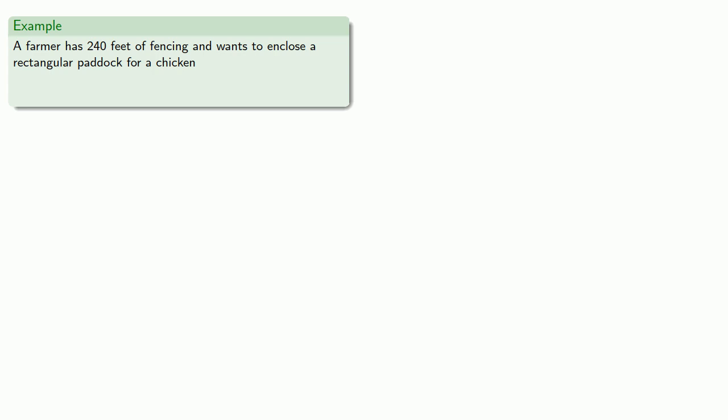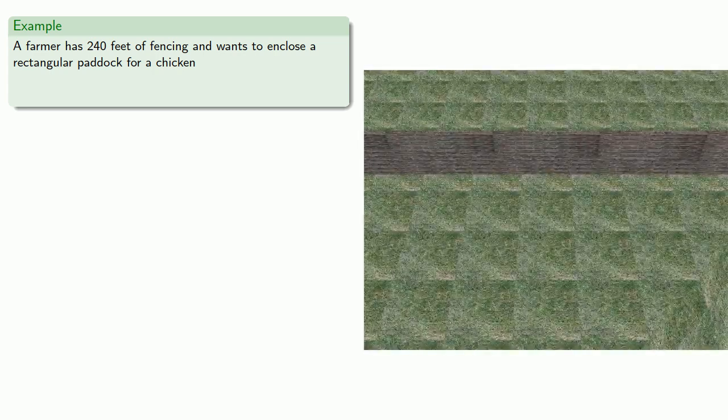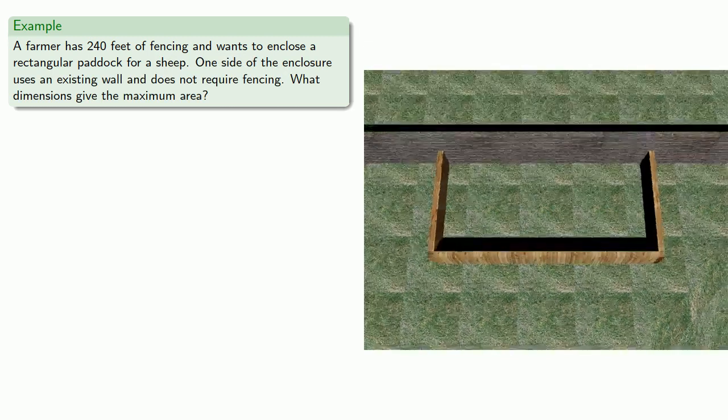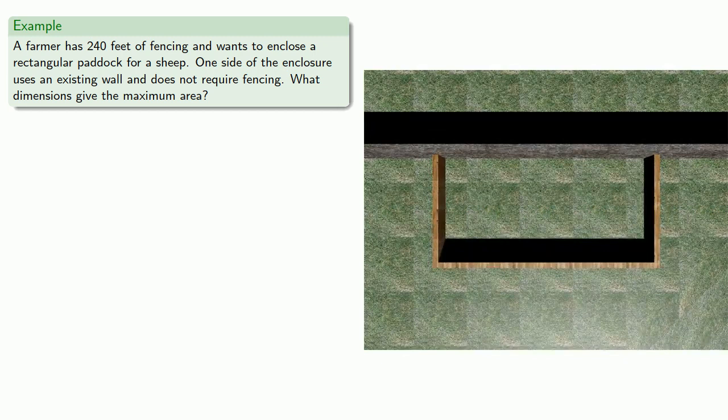For example, a farmer has 240 feet of fencing and wants to enclose a rectangular paddock for a sheep. One side of the enclosure uses an existing wall and does not require fencing. What are the dimensions that give the maximum area? You should recognize this as a Calculus 1 optimization problem, but we'll look at it in multivariable calculus.